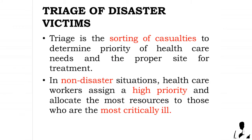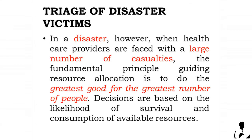Triage of disaster victims: triage is the sorting of casualties to determine priority of health care needs and the proper site for treatment. In non-disaster situations, health care workers assign high priority and allocate the most resources to those who are most critically ill. In a disaster, however, when health care providers face a large number of casualties, the fundamental principle guiding resource allocation is to do the greatest good for the greatest number of people. Decisions are based on the likelihood of survival and consumption of available resources.